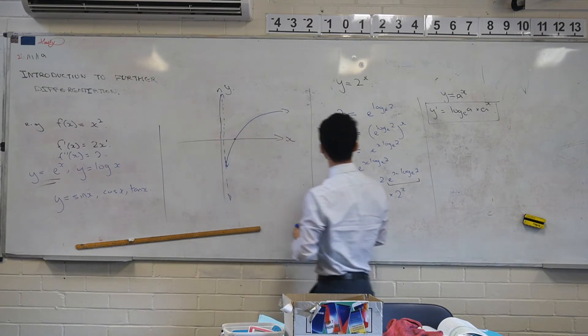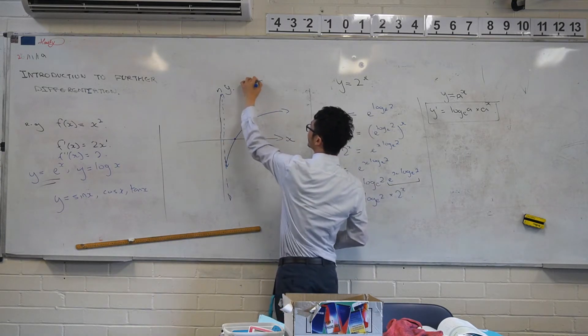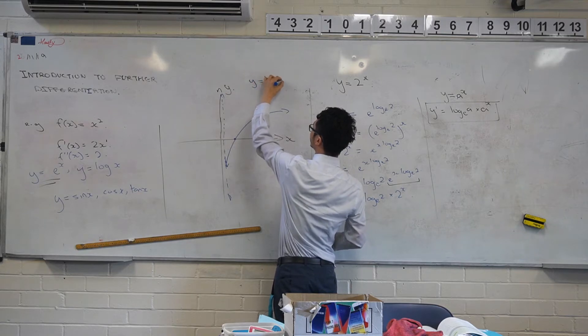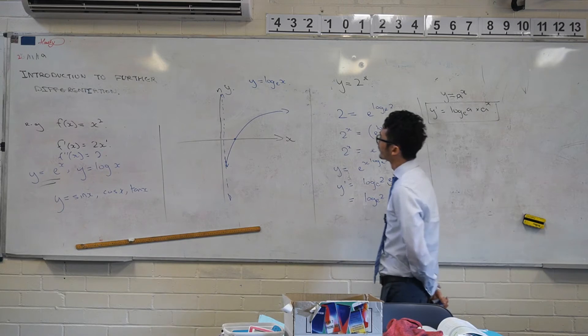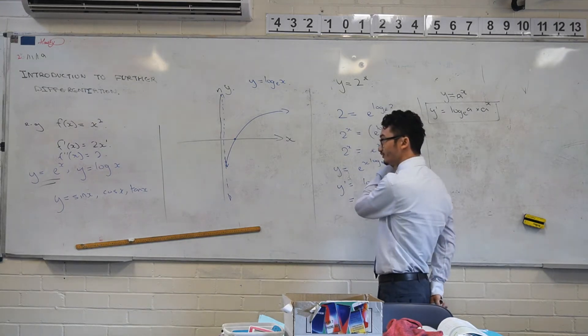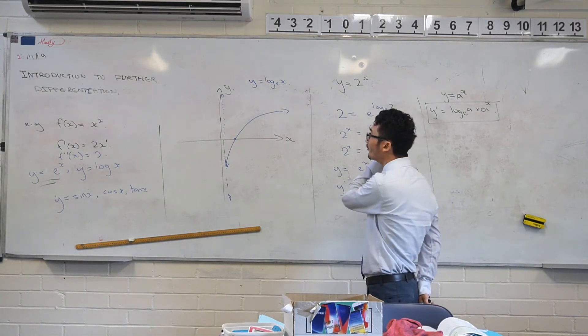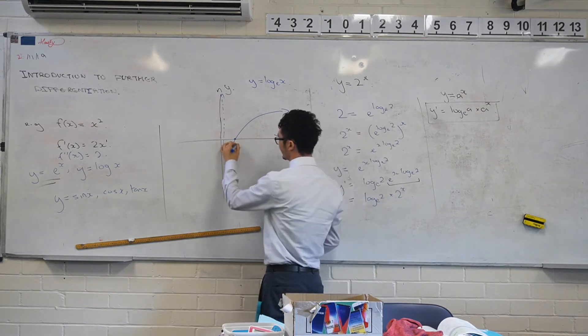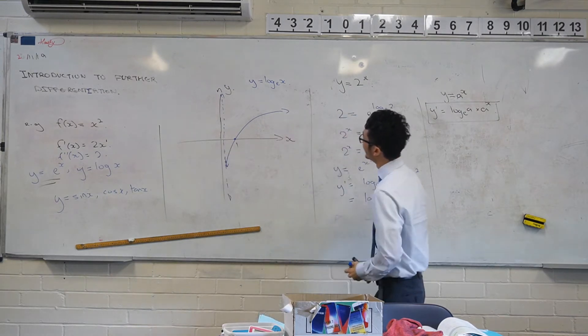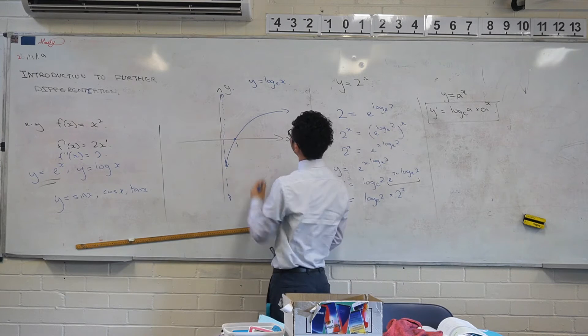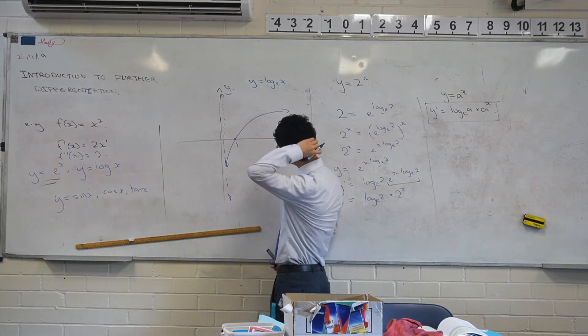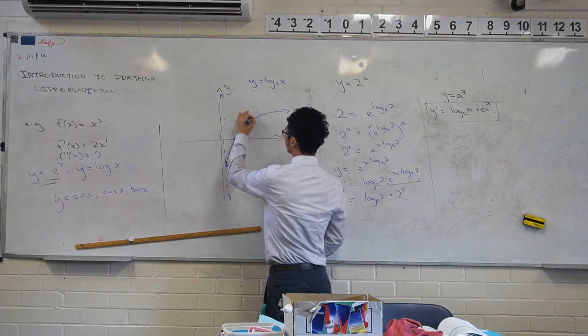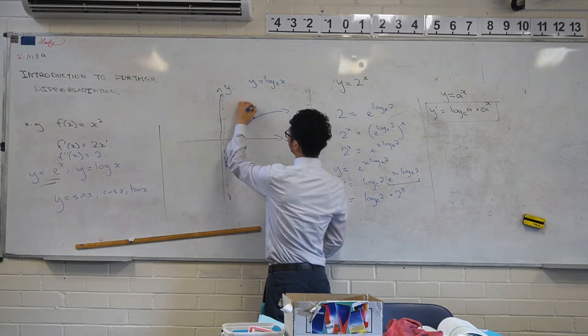So if this is y equals log base e of x, when x is equal to 1, y equals 0. And you can chuck in a reference point too if you want. Maybe like, well, you can do e. That's a nice one, isn't it? So e, 1.